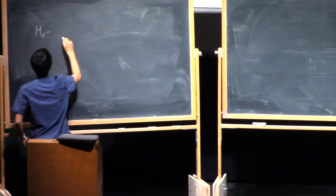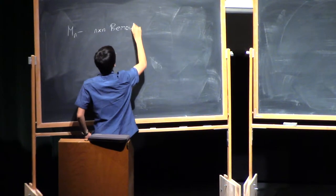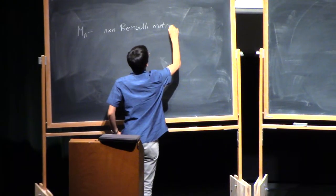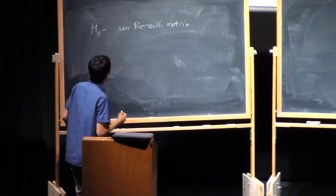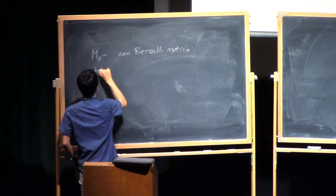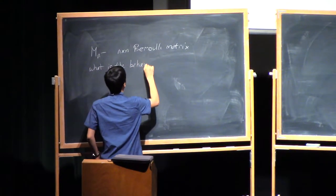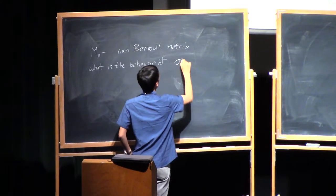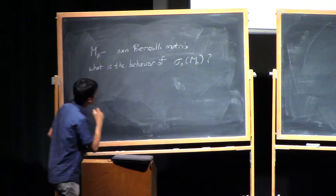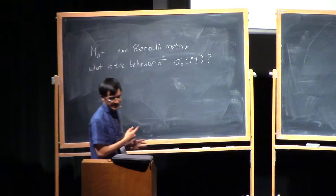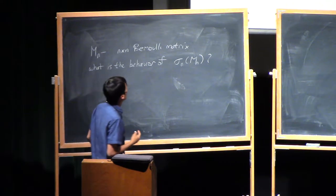We're going to take MN to be an N by N Bernoulli matrix — a square matrix of plus and minus ones. We're interested in the behavior of the smallest singular value. In the rectangular case, the smallest singular value was of size root N with my normalizations. But now it's actually a lot smaller.